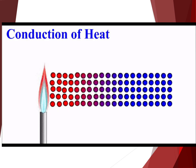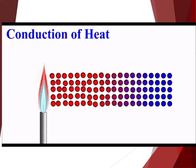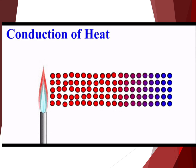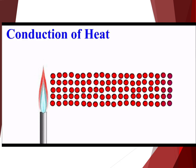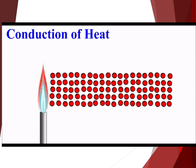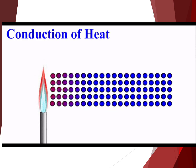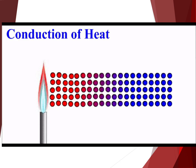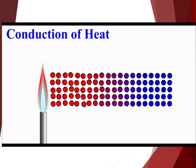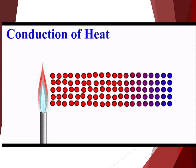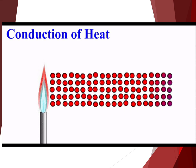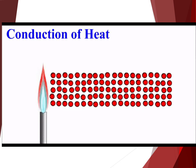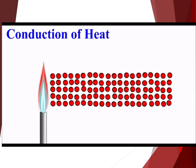Materials with tightly held electrons, such as wood and paper, make poor conductors. These materials are called insulators. A poor conductor is a good insulator, and a good insulator is a poor conductor.